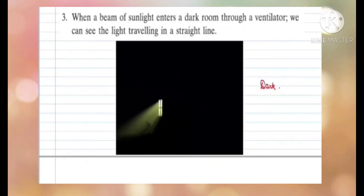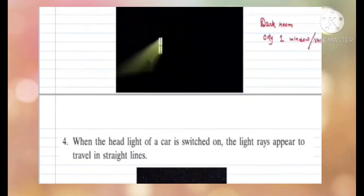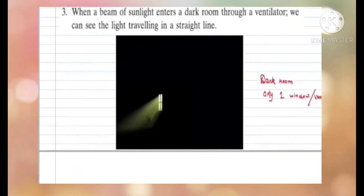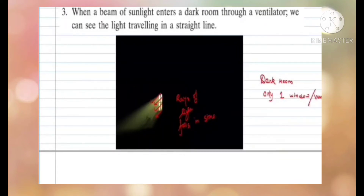You may have observed in a dark room — say, you have one window or one ventilation. Whenever sunlight falls from that ventilated window, you see that the rays of light fall in a straight line. Even by looking at the rays of light coming from a well-illuminated window in a dark room, you can tell that light travels in a straight line.